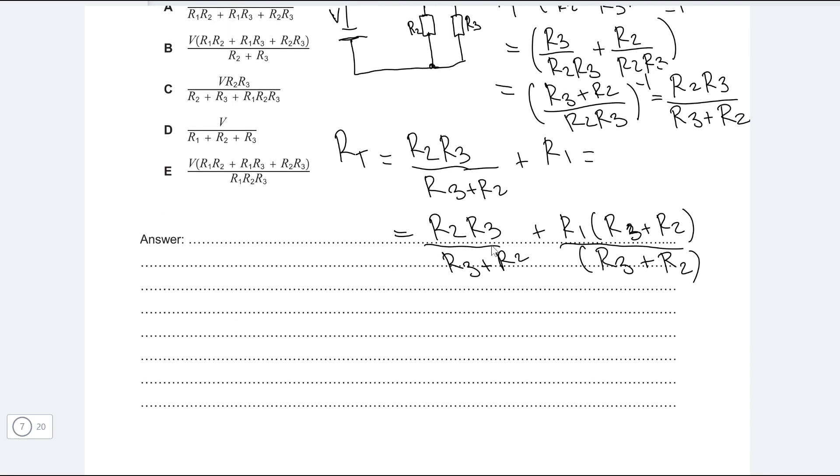So this will be equal to R2 R3 over R3 plus R2 plus. Now R1 times by this is R3 plus R2 divided by R3 plus R2. Okay, now we're ready to put everything underneath a common denominator.